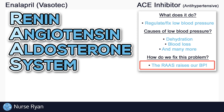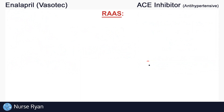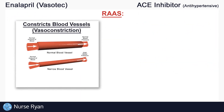The first way that the RAA system raises blood pressure is by constricting your blood vessels, also known as vasoconstriction. Constricted or narrowed blood vessels naturally increase your blood pressure. It's like trying to force fluid through a very narrow straw versus a wide and open straw — the pressure is higher in a very narrow straw, just like it would be in a very constricted blood vessel.